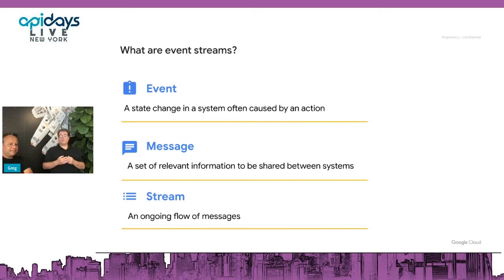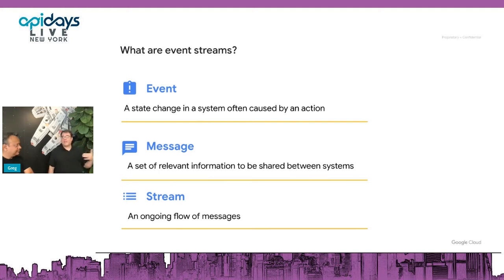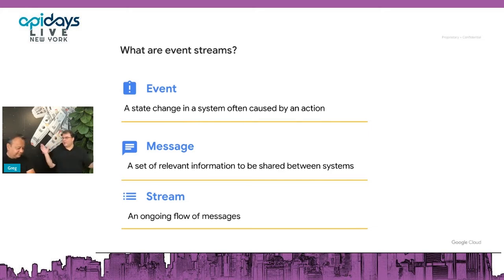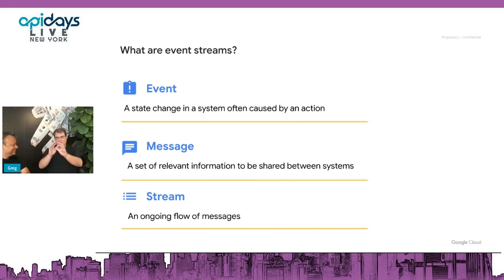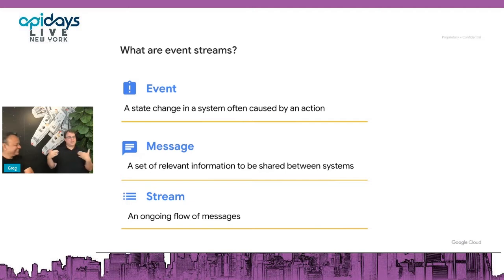Event streams are of course not terribly new. The publish-and-subscribe paradigm became very popular in the financial services industry back in the nineties, and that's how every trading floor was implemented. When Wall Street went online, that's how every online brokerage was based on that technology as well.